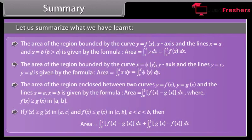If f(x) ≥ g(x) in [A, C] and f(x) ≤ g(x) in [C, B], where A < C < B, then the area between the curves can be formulated as the sum of the respective integrals over each sub-interval.